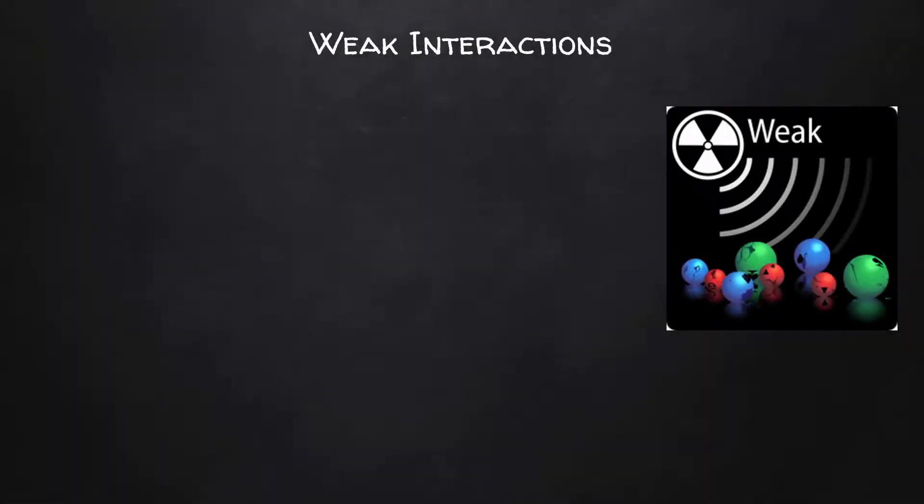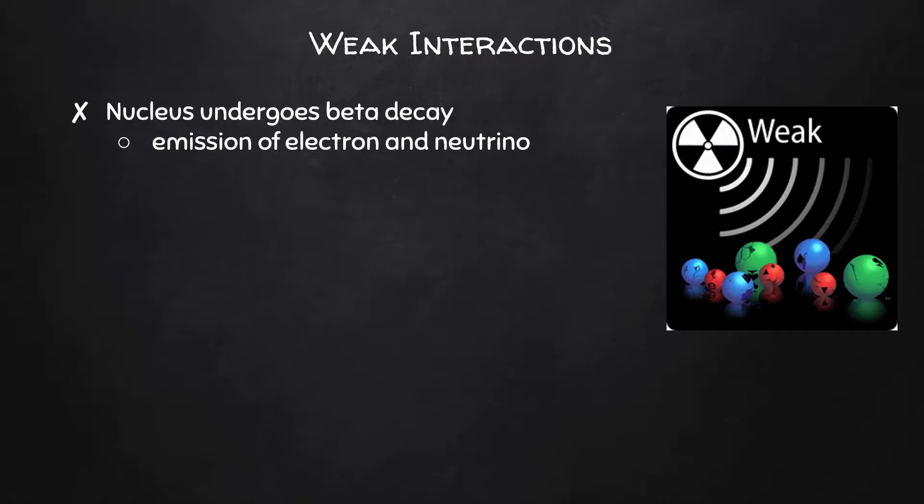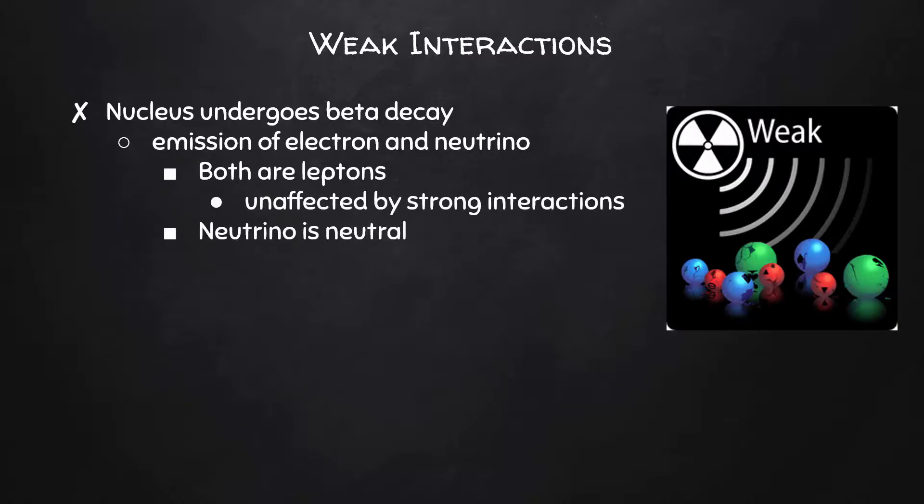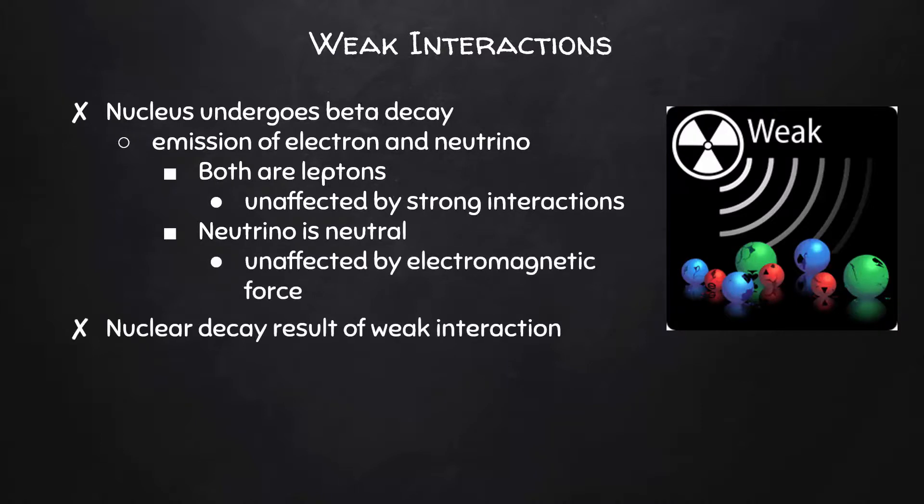It would be a weak interaction involved in the decay of a particle like a quark. For instance, when a nucleus undergoes beta decay. As part of beta decay, there's the emission of an electron and a neutrino. Since these are both leptons, they are unaffected by the strong force. Because the neutrino is neutral, it's unaffected by the electromagnetic force. Therefore, nuclear decay must be the result of some other interaction which we now know is the weak interaction.